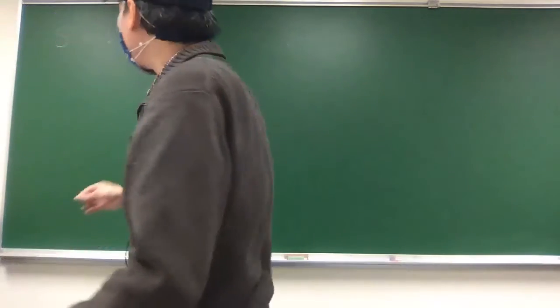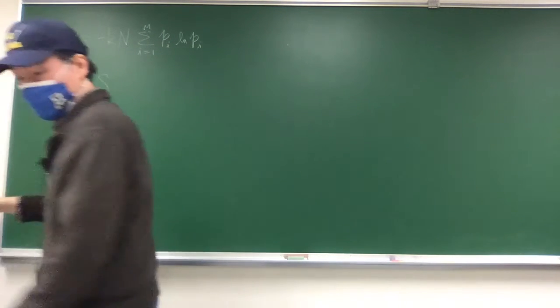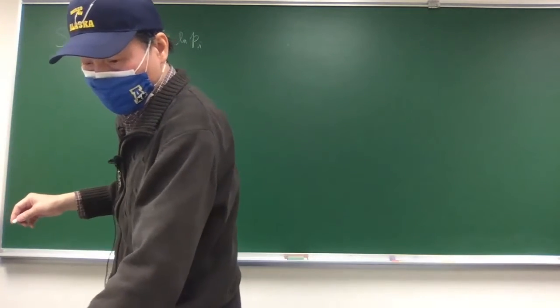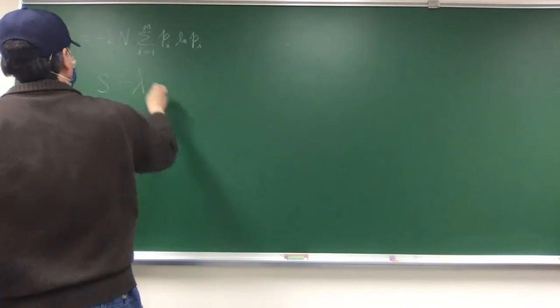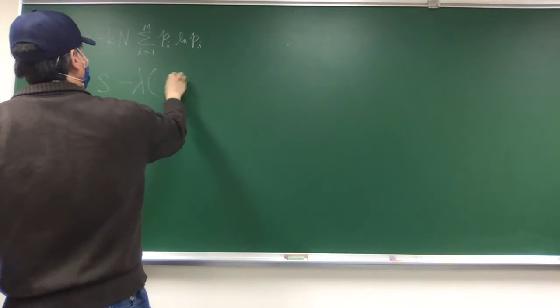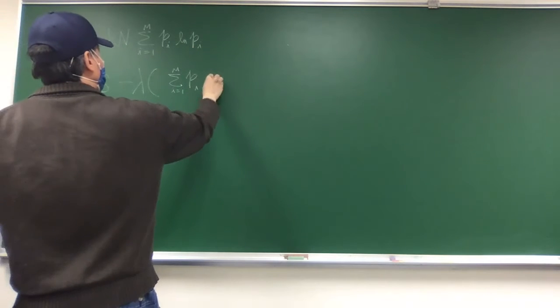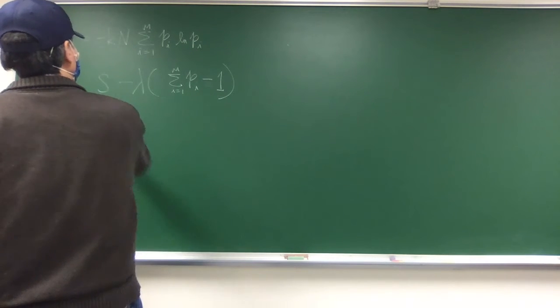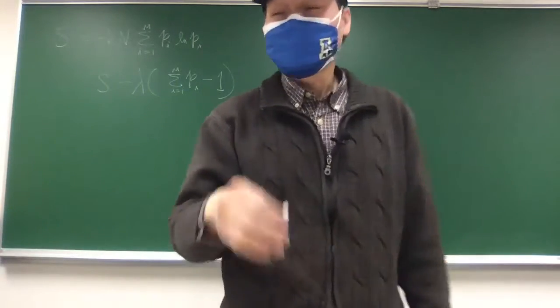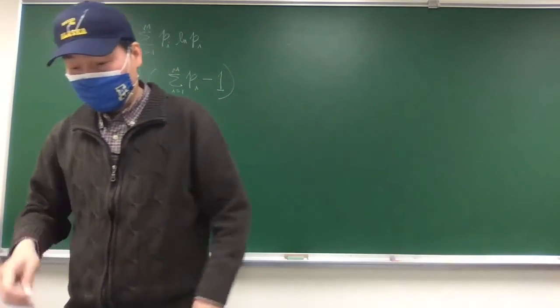Then what you need to do is maximize S, plus or minus lambda, it doesn't matter, the Lagrange multiplier. The constraint is sum over all the probability equals to 1, so minus 1 is 0. So you want to maximize this function, and lambda is your Lagrange multiplier.